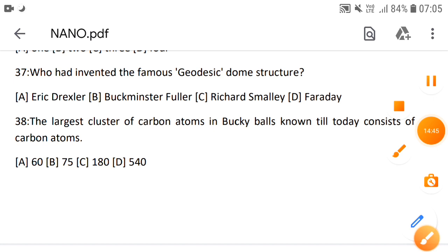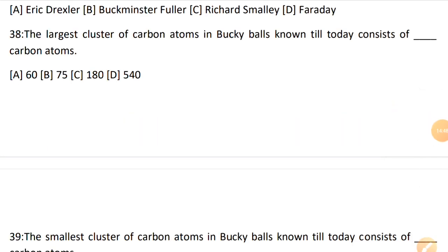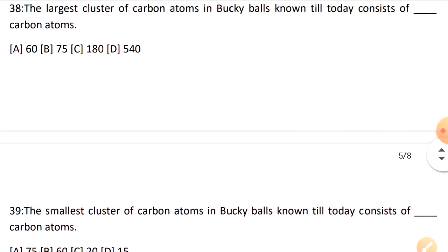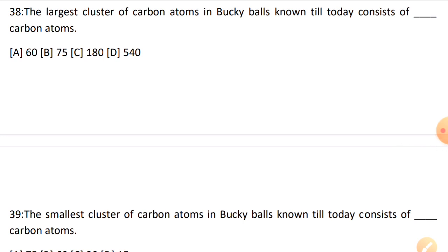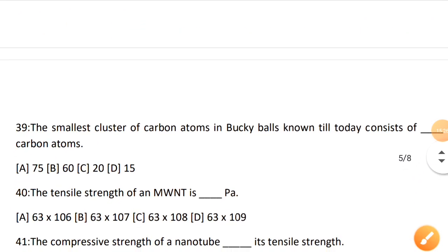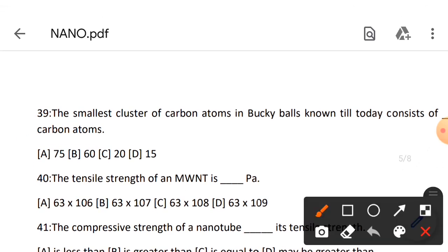Next: the largest cluster of carbon atoms in bucky balls known till today consists of dash carbon atoms. In bucky balls there are many structures known. The largest cluster which is possible is 540 atoms. If we talk about the smallest, the smallest is 20 - you can combine 20 carbon atoms for bucky balls to be made.